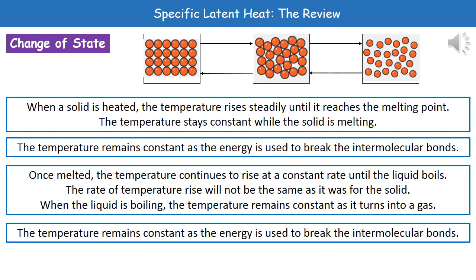The middle diagram shows the liquid — they're no longer in neat rows but they are all still touching each other; we don't have big spaces between them. Then finally on the far right, the gas where all the particles are spaced out. The changes of state between solid and liquid is melting, liquid to gas is evaporating, gas to liquid is condensing, and liquid to solid is freezing.